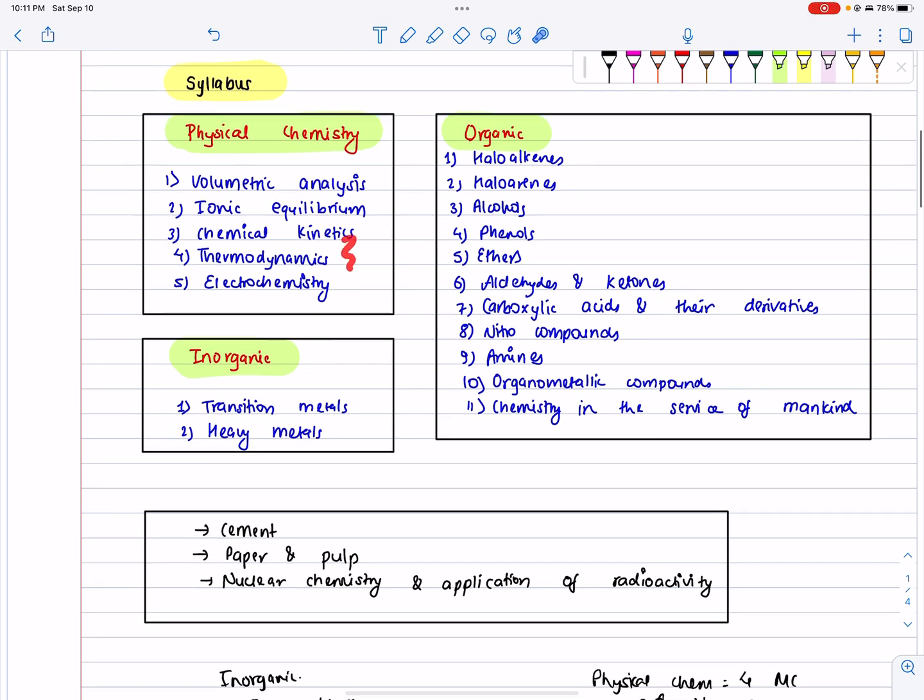We need to include topics like rate constant and thermodynamics - it's a very good concept. Also electrochemistry and EMF. These are very important concepts. Physical chemistry and organic chemistry can use transition metals.